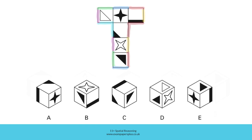Finally, consider option E. In E, these three faces are next to one another, and if we consider the net, that will be the case. Once again, though, it's the relationship between these two faces which is incorrect. Look at the shared edge and the position of this figure in relation to it. In E, the orientation of this figure is wrong — this part of the figure should touch the shared edge, but in E it's the white shaded area which is closest, not the correct part of this figure. So we can eliminate option E and confirm that D was indeed the right answer. D represents the cube which you would see if you folded this net to create it.